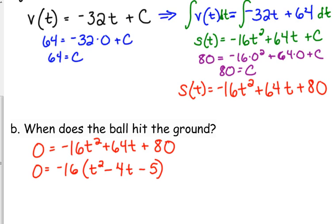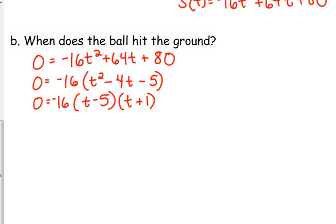Now that's a lot nicer to factor, right? So if we factor that out, what is that? t minus 5 times t plus 1. So that says t equals 5 or t equals negative 1. Yes, we've got two solutions, but one of them doesn't even make sense. You can't have negative time. So it hits the ground after 5 seconds.